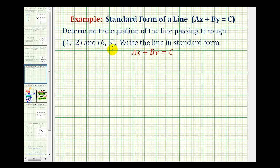We want to write the equation of the line passing through these two points in standard form. To do this, we're first going to write the equation of the line in slope-intercept form, and then change the form to standard form.